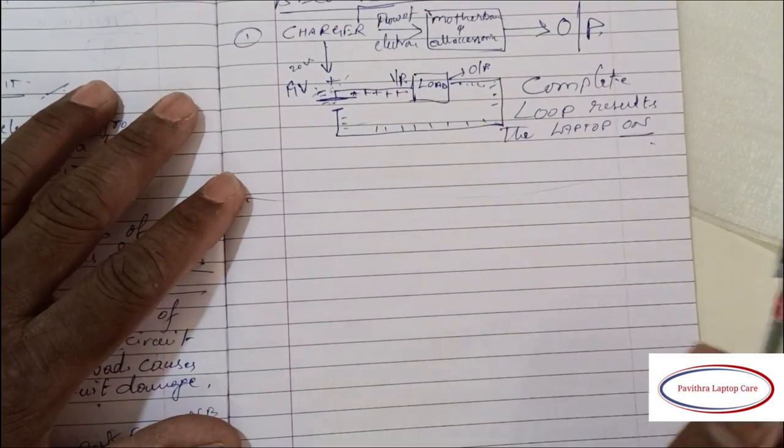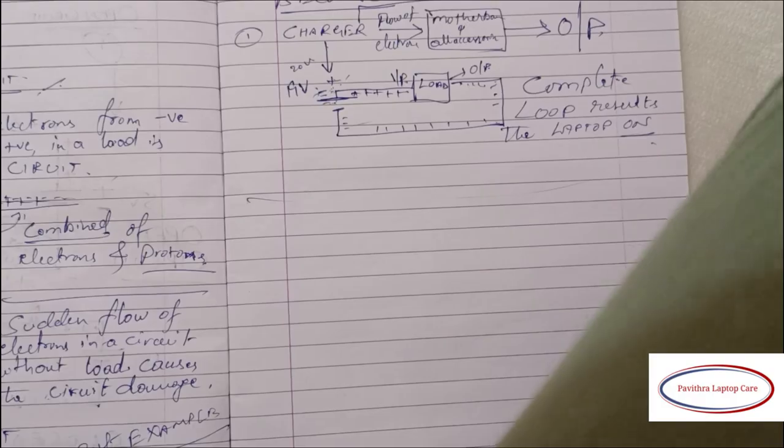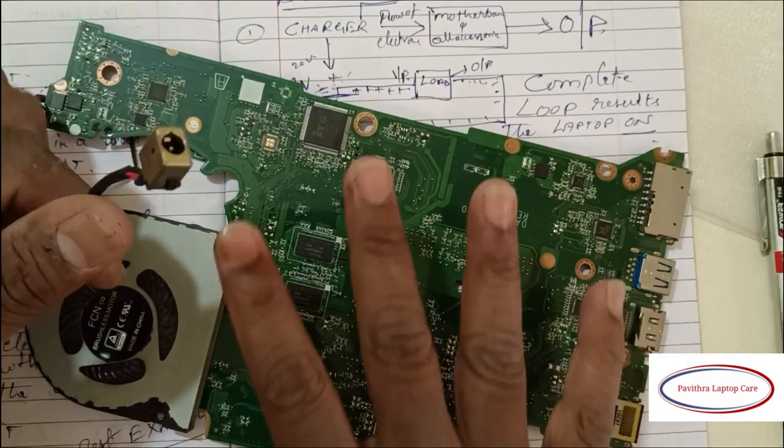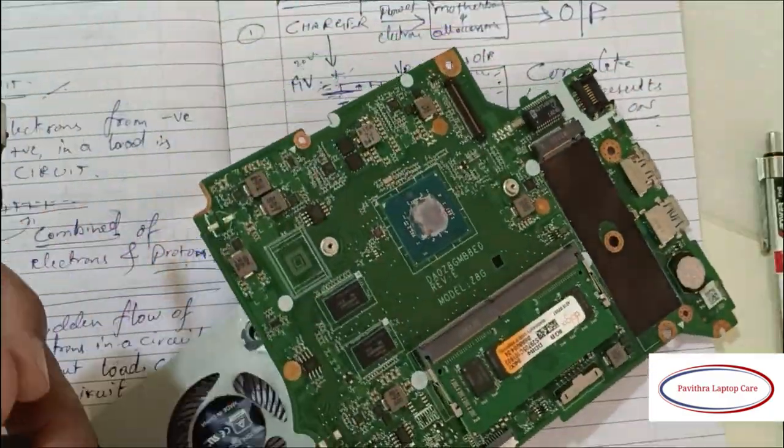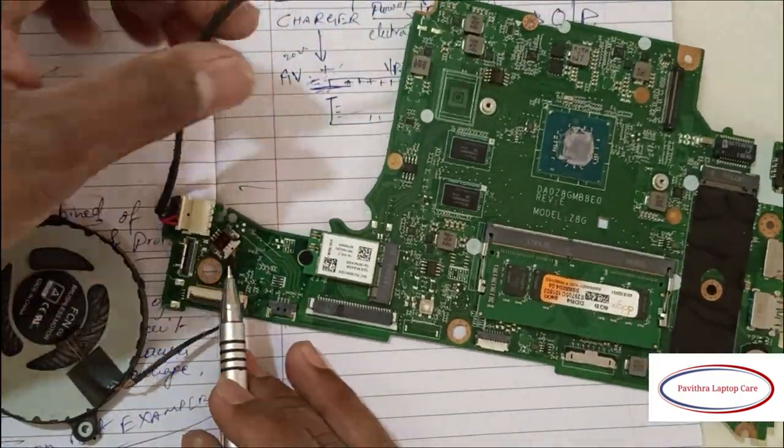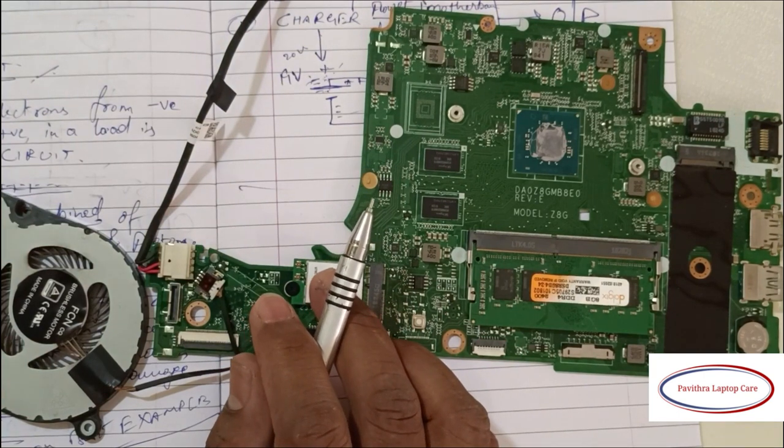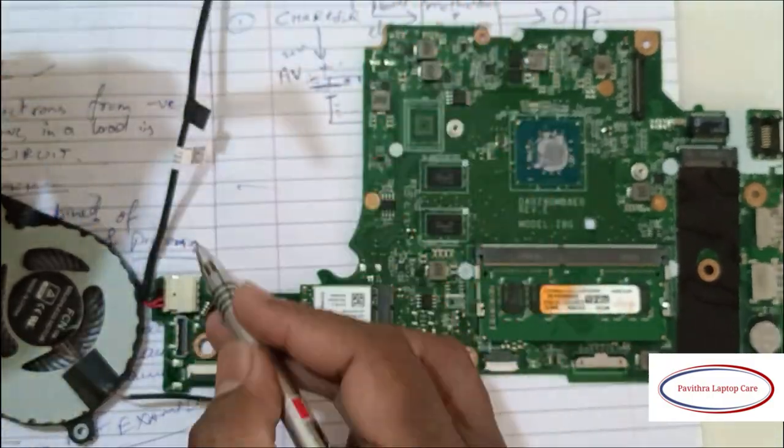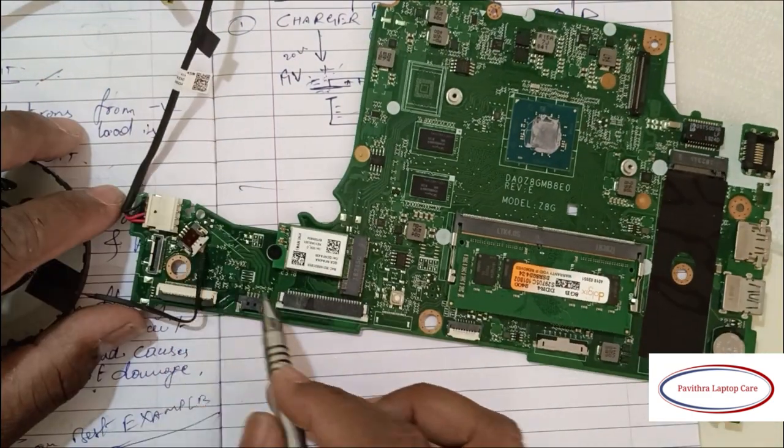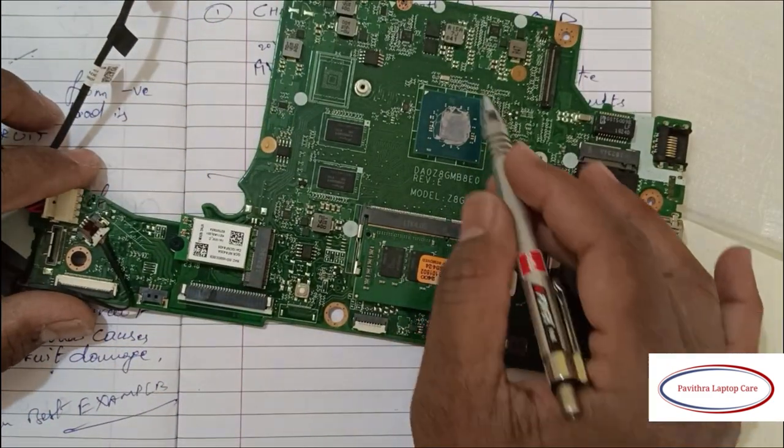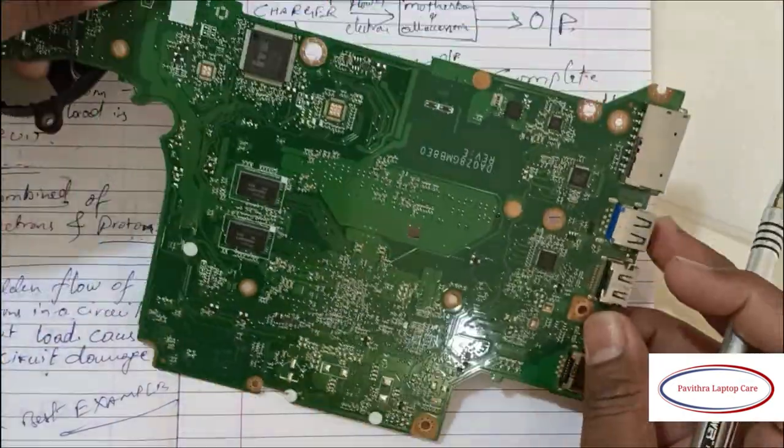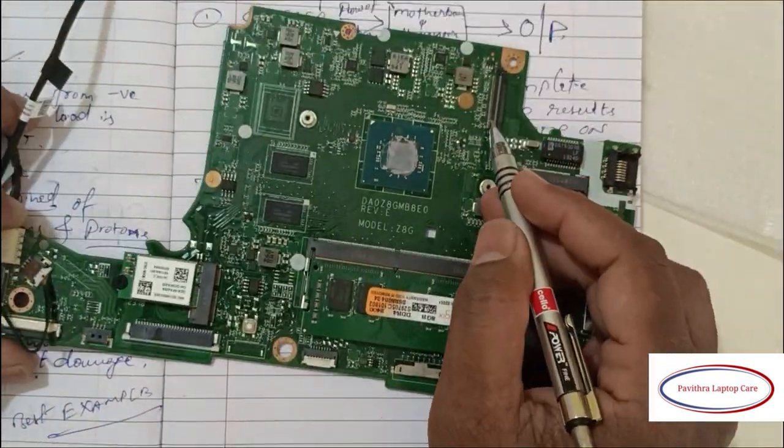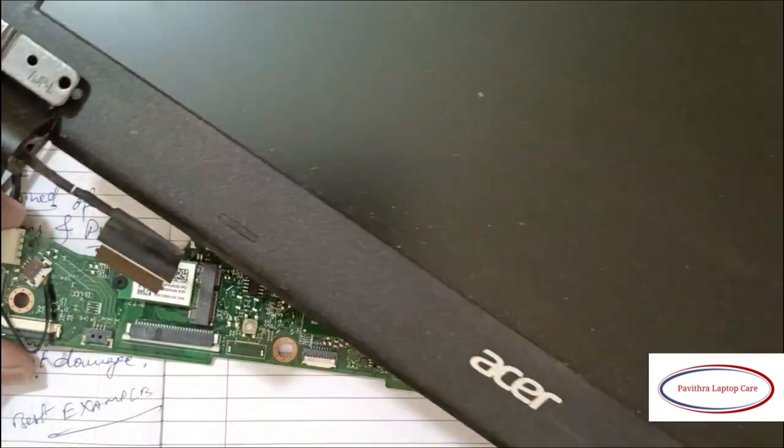Here I have taken a motherboard. This is the DC jack. If we connect the adapter to the DC jack, red is the positive terminal and black is the negative terminal. The flow of electrons flows through the motherboard and gives the output in the display. See, this is the display. Thank you.